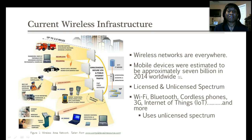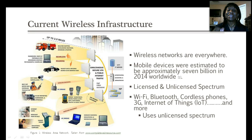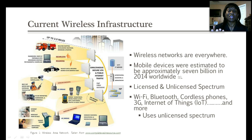Within our wireless infrastructure we have mobile devices. It was estimated in 2014 that we have 7 billion mobile devices worldwide. Between the wireless networks and mobile devices, they both use either licensed or unlicensed spectrum.